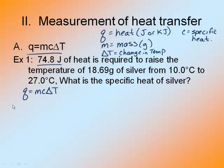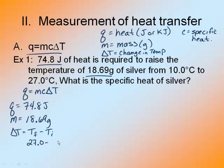It says it requires 74.8 joules. That means our heat. It says the temperature of 18.69 grams. That's my mass. And the temperature goes from 10 degrees Celsius to 27 degrees Celsius. So temperature is always T final minus T initial. Temperature final minus temperature initial, which in this case, our final temperature is 27 degrees Celsius minus our initial temperature, which is 10 degrees Celsius, which is a change of 17 degrees Celsius.